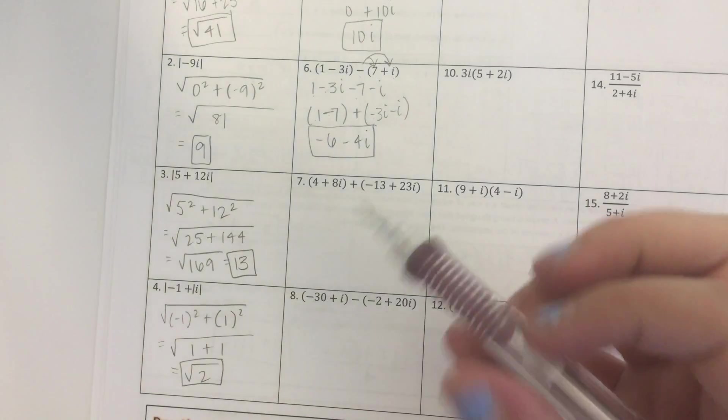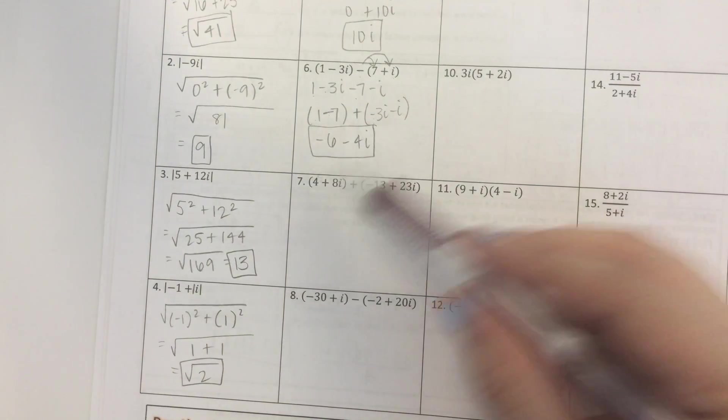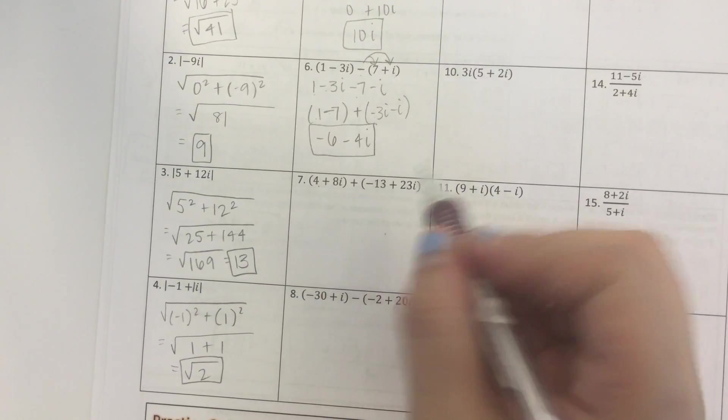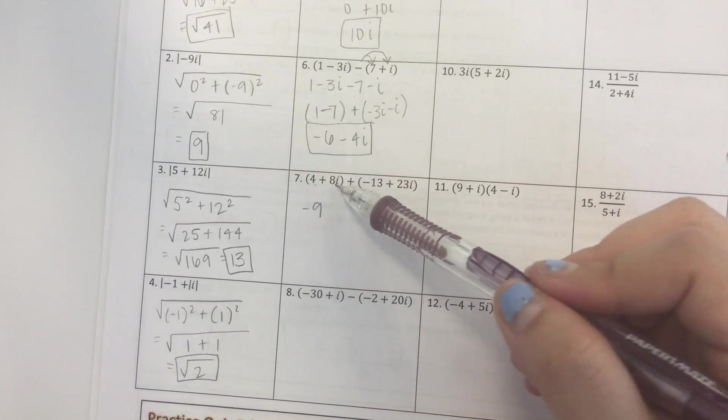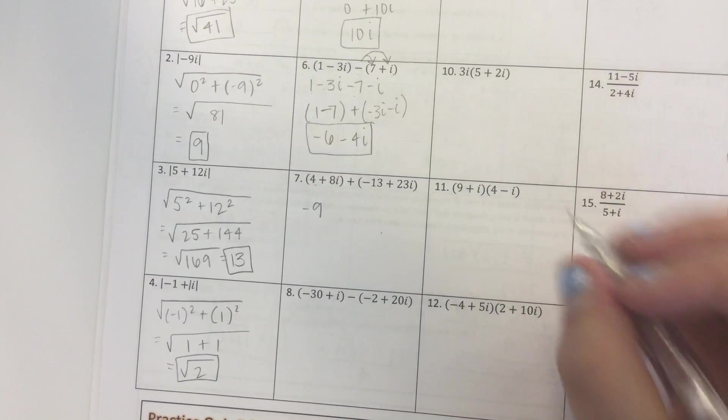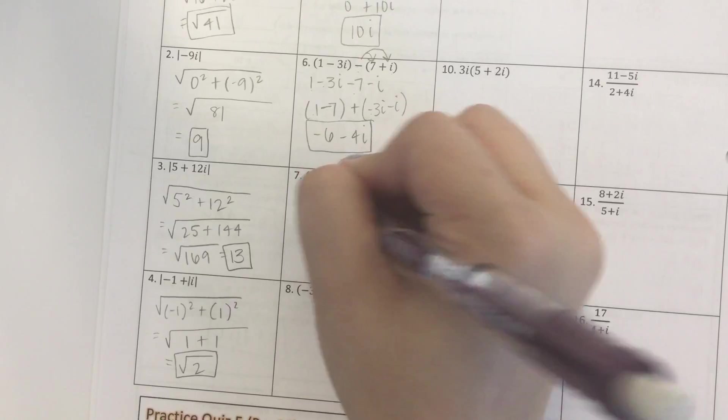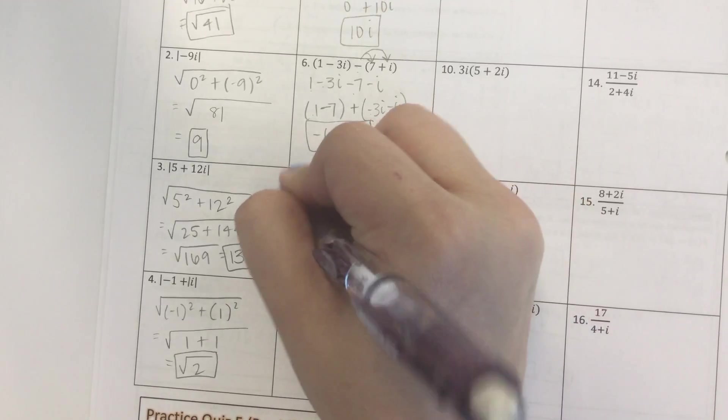Number 7. This is an adding problem. All I have to do is combine like terms. 4 minus 13 is negative 9. 8i plus 23i is 31i, and we're done.